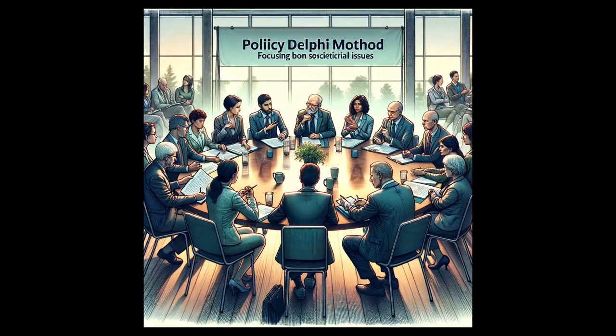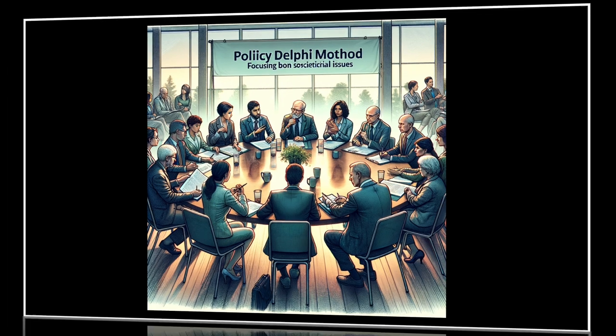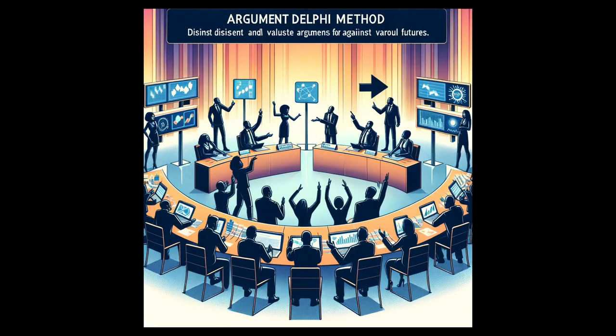3. Policy Delphi, focusing on societal topics and phenomena with the aim of assisting and advancing sustainable decision-making. 4. Argumentative Delphi, centered on the differing views and arguments of experts, through which it is possible to script and map multiple futures. This variation allows and supports dissent instead of consensus.